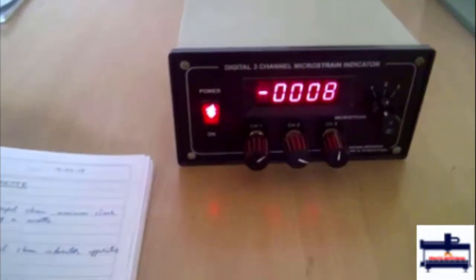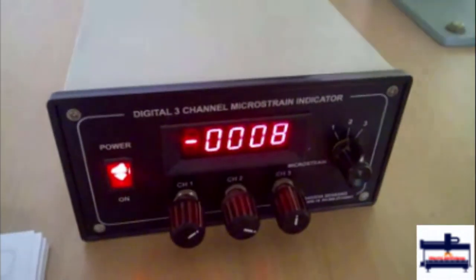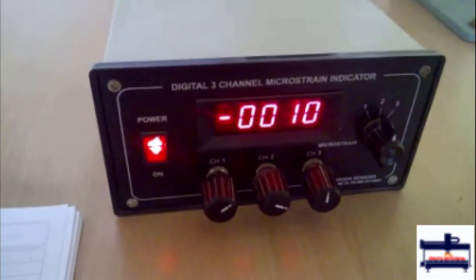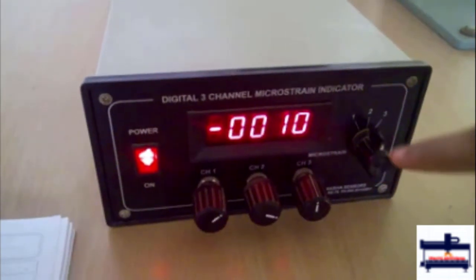After taking down the value which will be epsilon a value, we remove the load, shift this to channel 2. Again we set this to 0, apply the load and take down the reading for channel 2.